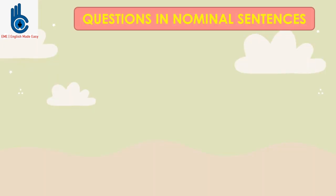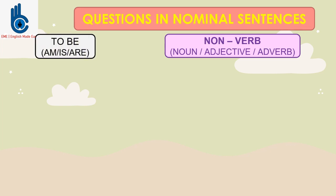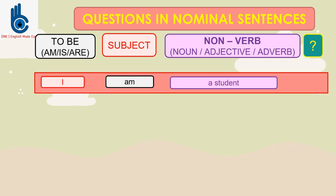Now, we will see how to make questions in nominal sentences. To make a positive sentence, we use this pattern. And to make a question is simply by exchanging the subject and to be. Cukup dengan menukar posisi subject dan to be-nya. So, the pattern becomes to be followed by subject followed by non-verb. Don't forget the question mark. For example: I am a student. So, the question becomes: Am I a student?